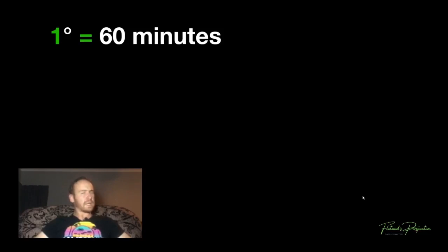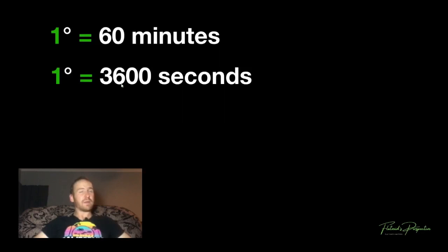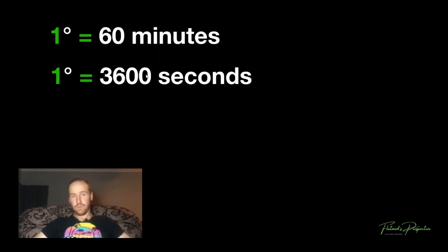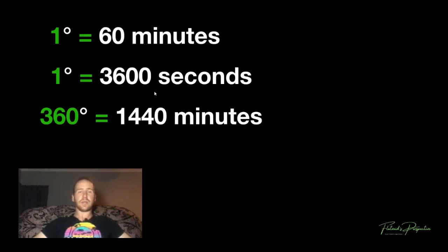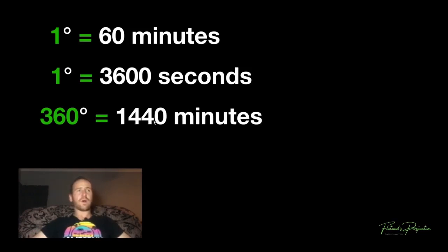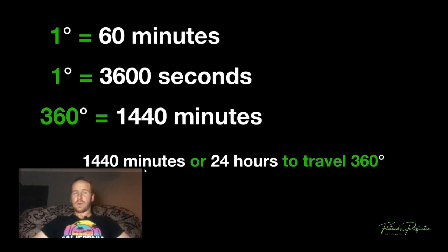What is one degree? It's actually simple — one degree is derived from 60 minutes. Remember that one degree is equivalent to 60 minutes. The same can be said for one degree being equivalent to 3,600 seconds. So 360 degrees — the full circumference — equals 1,440 minutes. 1,440 minutes, or 24 hours, which makes a day, is to travel 360 degrees. So in other words, a full time lapse of a day — 24 hours — the star would travel 360 degrees around that circumference.